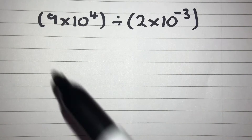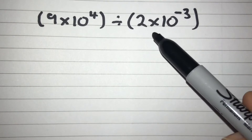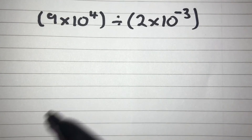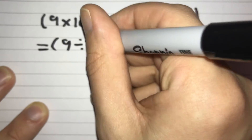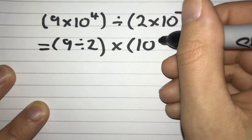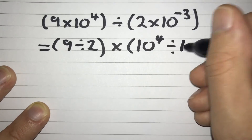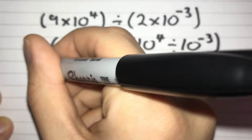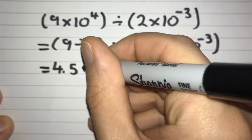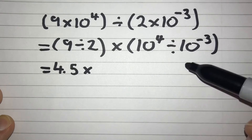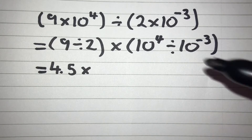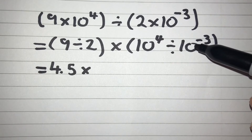In this example we have 9 times 10 to the power of 4 divided by 2 times 10 to the power of negative 3. So we can start off just the same by rearranging our calculation. We'll have 9 divided by 2 multiplied by 10 to the power of 4 divided by 10 to the power of negative 3. Well, 9 divided by 2 gives us 4.5, and then 10 to the power of 4 divided by 10 to the power of minus 3 — if we're dividing powers we've got to subtract, so it's 4 take away negative 3.